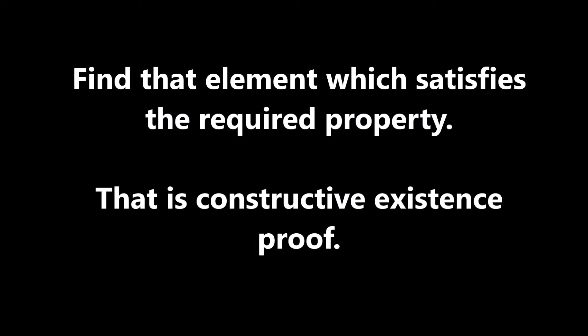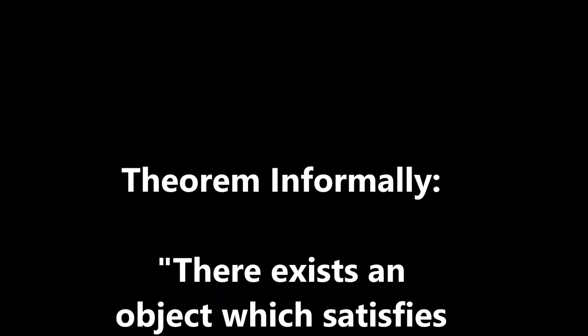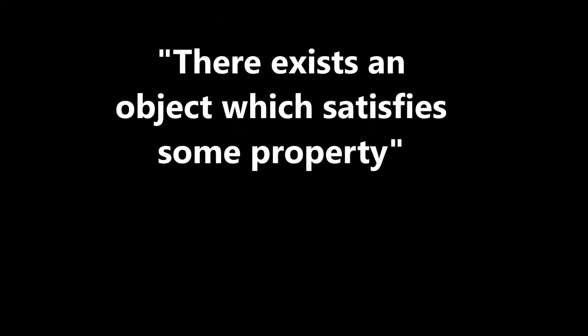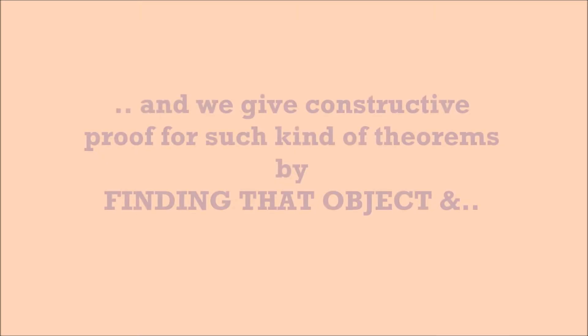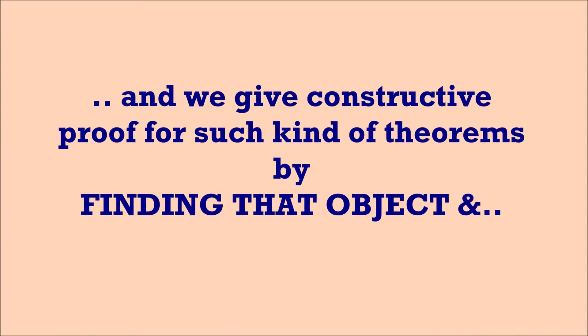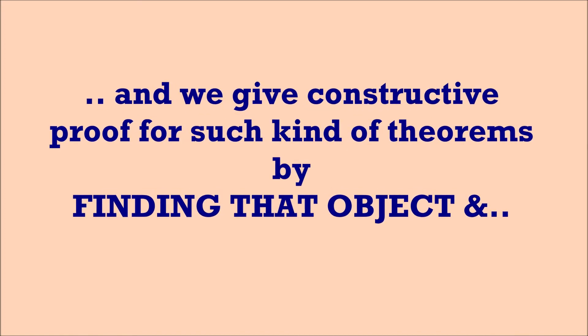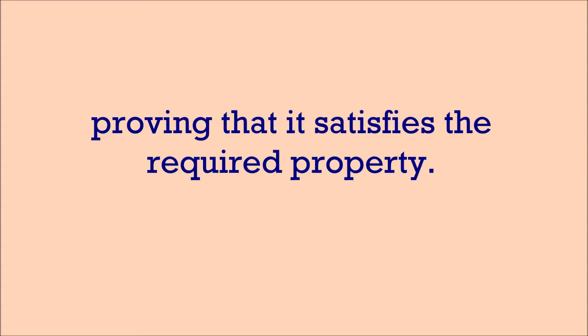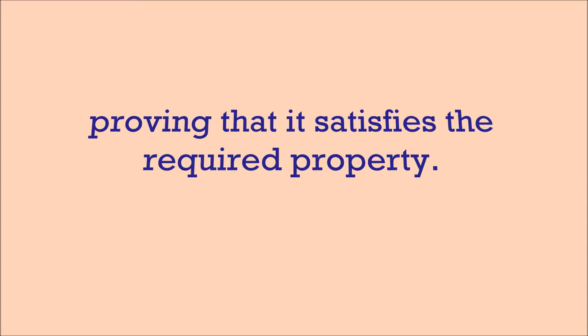To put it informally, if you have to prove a statement like 'there exists an object which satisfies some properties,' you have to find an object which exists and which satisfies that property. You have to exactly find that object. That is what is required for proving the existence constructively.